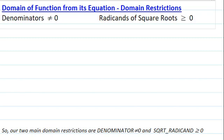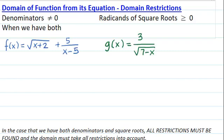So, our two main domain restrictions are: denominator not equal to 0, and a square root radicand greater than or equal to 0. In the case that we have both denominators and square roots, all restrictions must be found and the domain must take all restrictions into account.